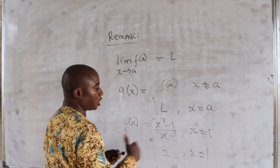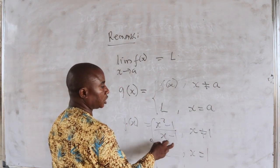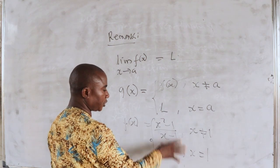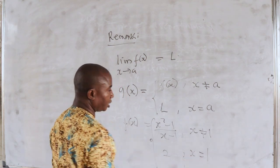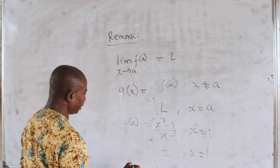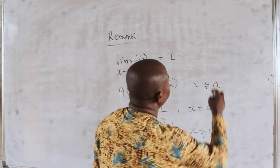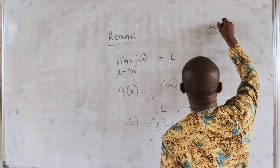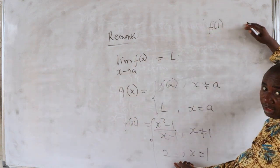We can see that this new function is now a continuous function at the point x equal to 1. We can see that f of 1 exists. It is 2.